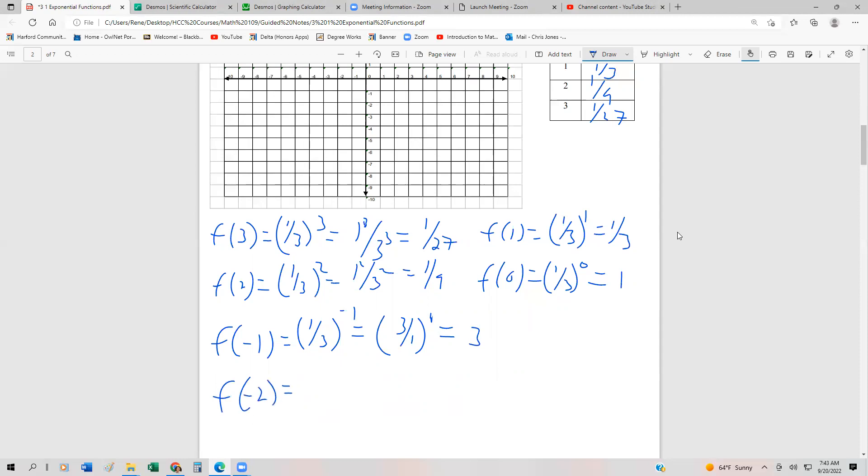f at negative two is going to be one-third to the minus two, which is going to be three over one squared, which is nine. And then as expected, the last one's going to be 27. So we have one over three to the negative three, three over one cubed, which is 27.